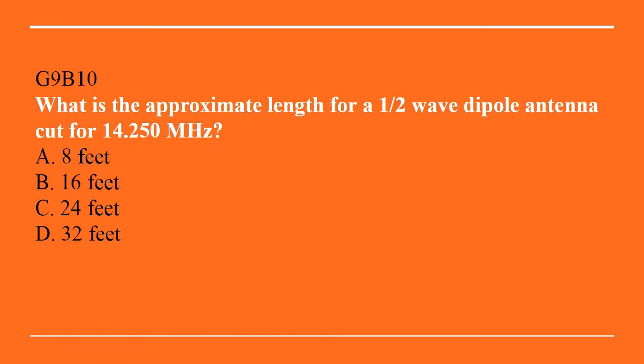G9B10: What is the approximate length for a half-wave dipole antenna cut for 14.250 MHz? A. 8 feet. B. 16 feet. C. 24 feet. Or D. 32 feet. The correct answer is D, 32 feet.